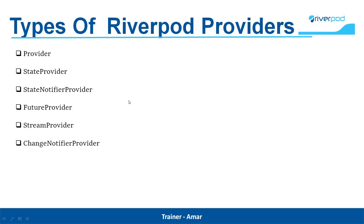What are the types of Riverpod providers we will cover? The first one is Provider. Then we have State Provider, State Notifier Provider, Future Provider, Stream Provider, and Change Notifier Provider. All these things I will discuss as I proceed.